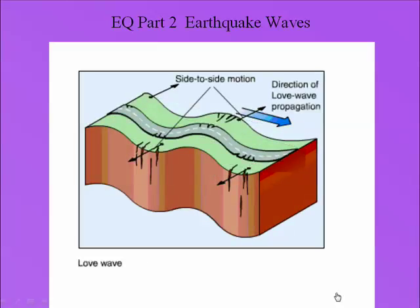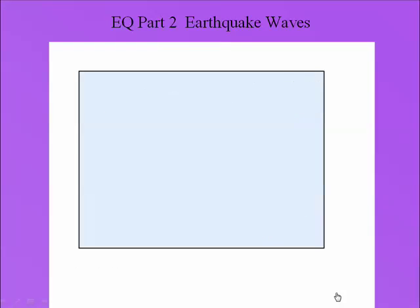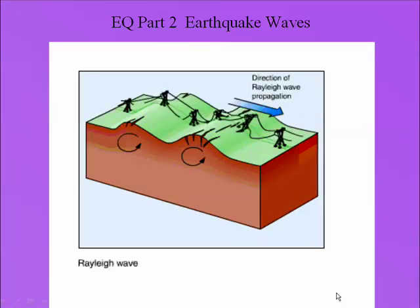The third wave, a Love wave, is side-to-side on the surface. And the fourth wave, a Rayleigh wave, also on the surface, is a more circular movement similar to waves on the ocean.